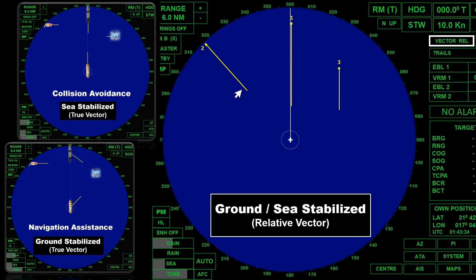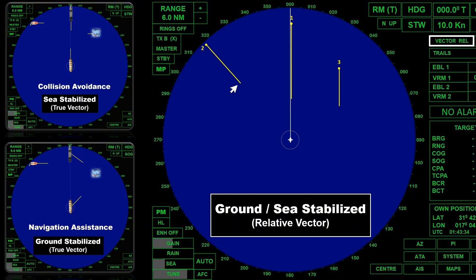Switching from sea stabilized to ground stabilized mode has no effect on the CPA and TCPA of the acquired targets. A separate video will provide a detailed explanation of how to interpret and calculate the vector in relation to ship's speed and distance traveled, including how to determine a risk of collision even when the radar is set to true vector sea stabilized. For a stationary target, it will show a vector in the opposite direction of the ship's movement, and the length of that vector will represent the speed of own ship.